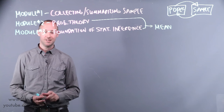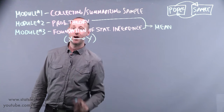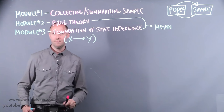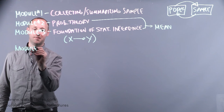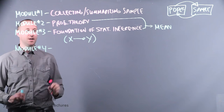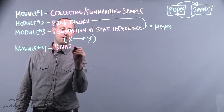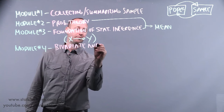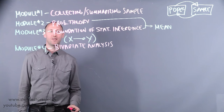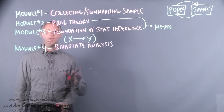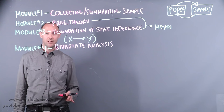Often in the sciences, we're more interested in looking at the effect of some variable X on some Y variable. In module four, we start to lay the foundation for this, covering bivariate or two-variable analysis. We'll also start to define what it means for a method to be parametric versus non-parametric. Most of the course that follows involves looking at the relationship between two variables.